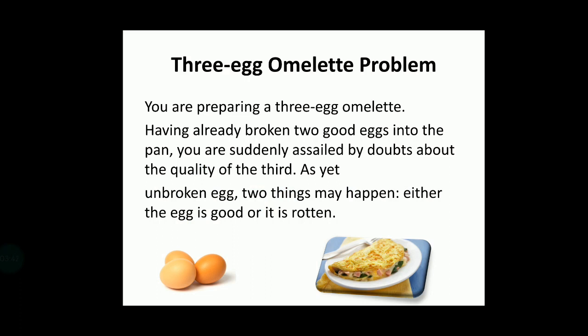Let us understand decision theory with a practical example — the three-egg omelet problem. Imagine you are preparing a three-egg omelet. You've already put two eggs into the pan and suddenly get doubts about the third egg — whether it might be rotten. You now face a choice: prepare the omelet with only two eggs, or put the third one in and take a risk.